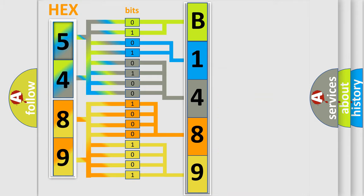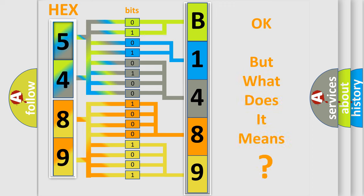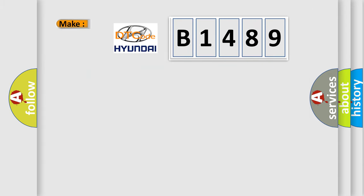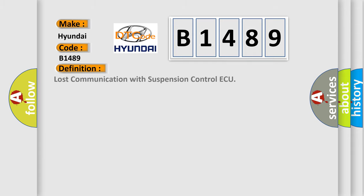We now know in what way the diagnostic tool translates the received information into a more comprehensible format. The number itself does not make sense to us if we cannot assign information about what it actually expresses. So, what does the diagnostic trouble code B1489 interpret specifically for Hyundai car manufacturers? The basic definition is: Lost communication with suspension control AQ.